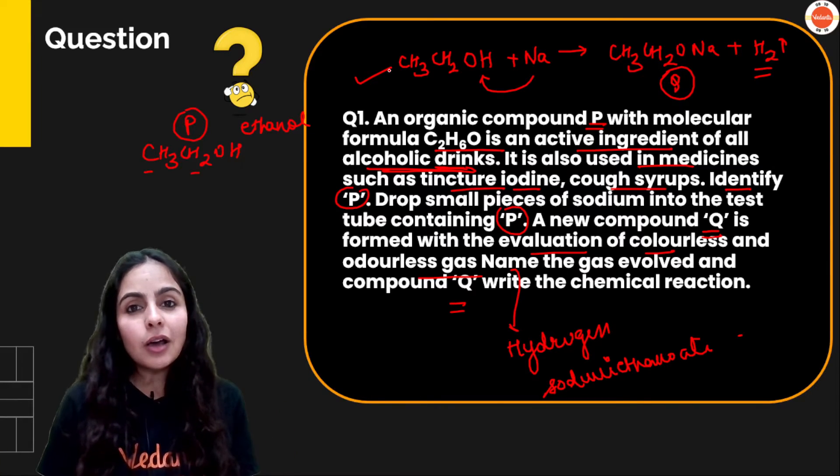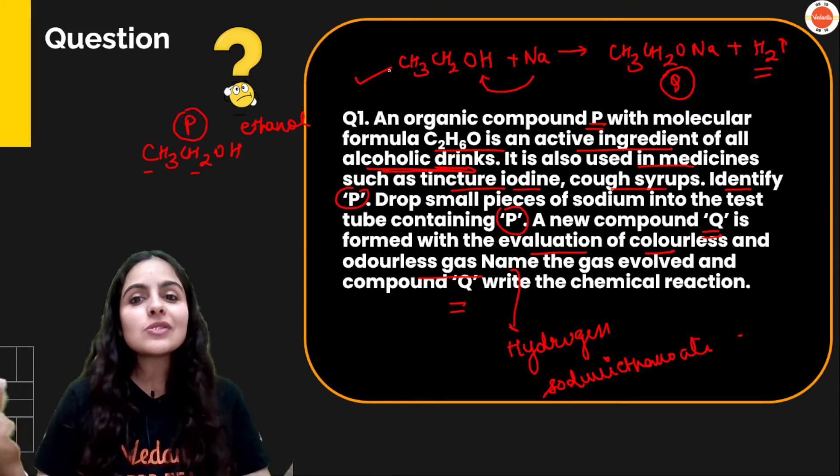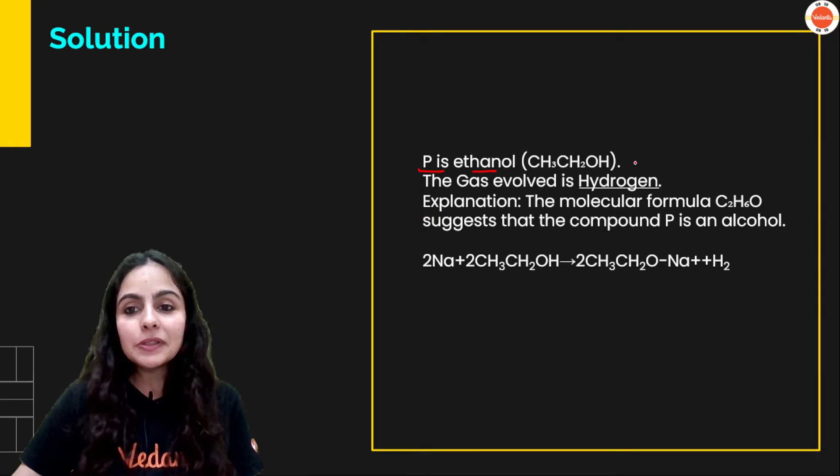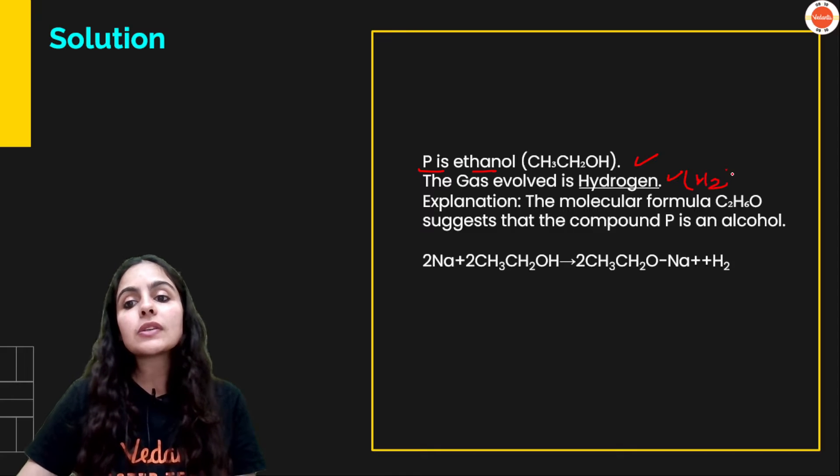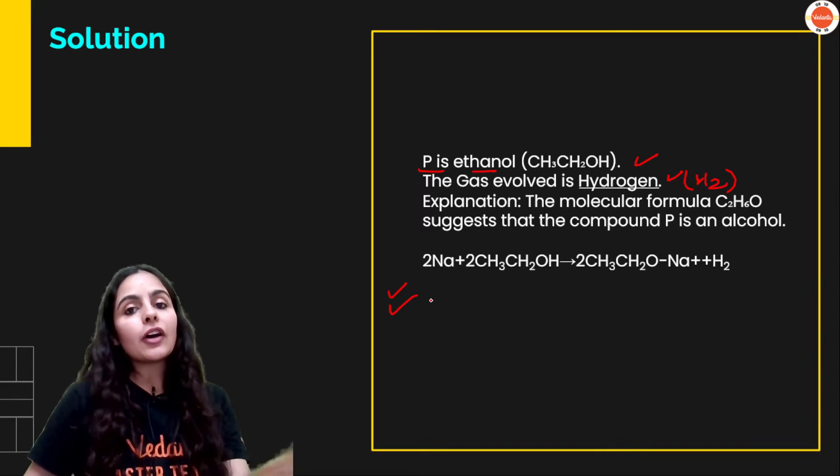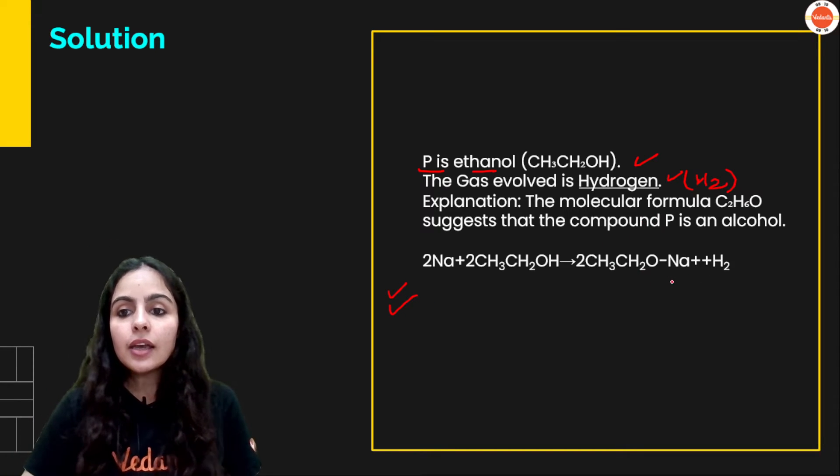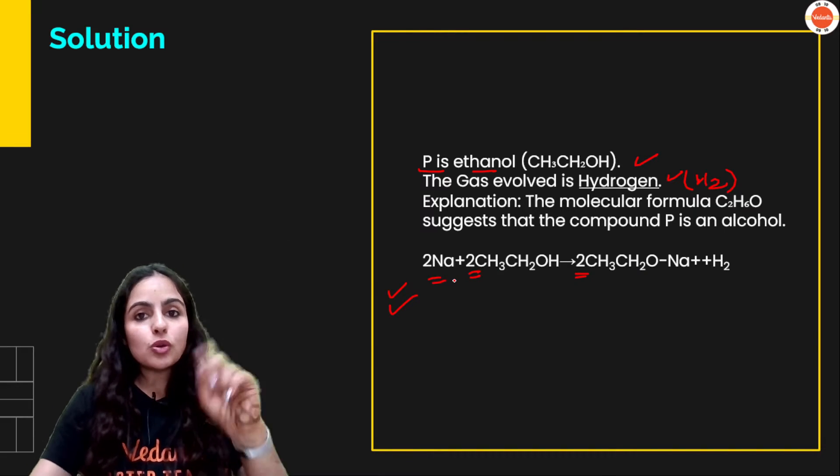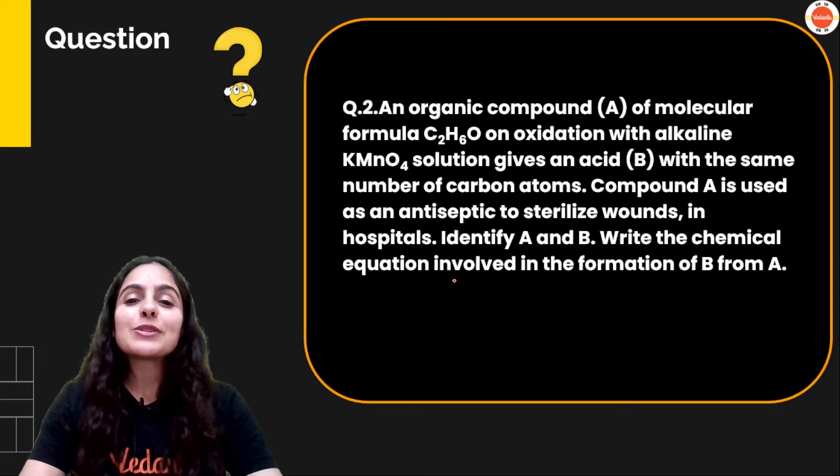And write the reaction. The reaction we already wrote. Isn't that simple? Just line by line padate jao, or jo jo poocha hai wo dete jao. You will be done with your answer in no time. P is nothing but ethanol. Gas ka naam boli toh siraf naam. Then you have given the entire reaction, balanced reaction.